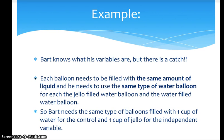Remember, in science you have to use the same things equally. Each balloon needs to be filled with the same amount of liquid. We don't want five grams of jello in the jello balloon but only two grams of water in the water balloon, because they won't have the same mass. He also needs to use the same type of water balloon for both — from the same package. Bart needs the same type of balloons: one cup of water for the control, and one cup of jello for the independent variable.